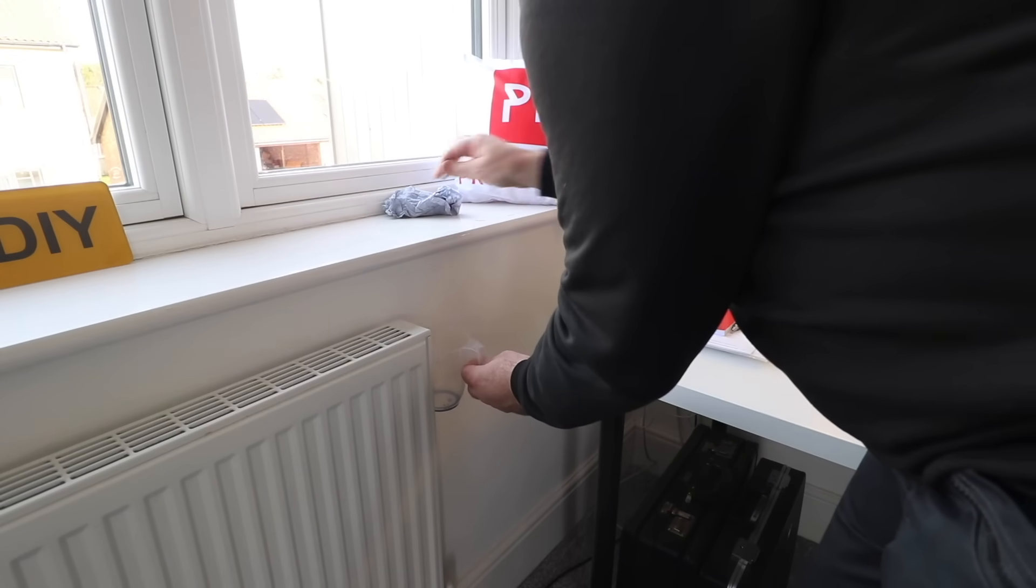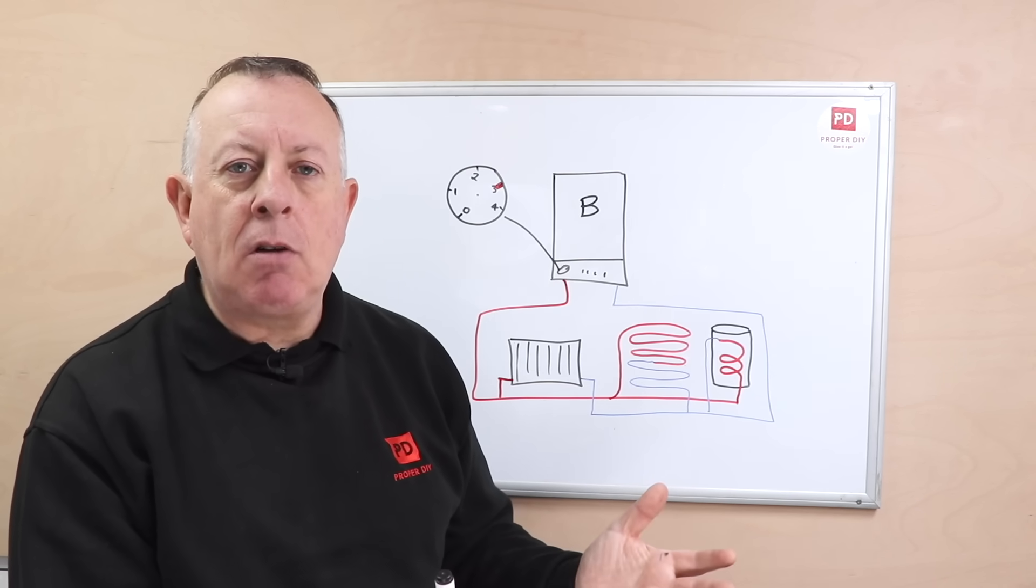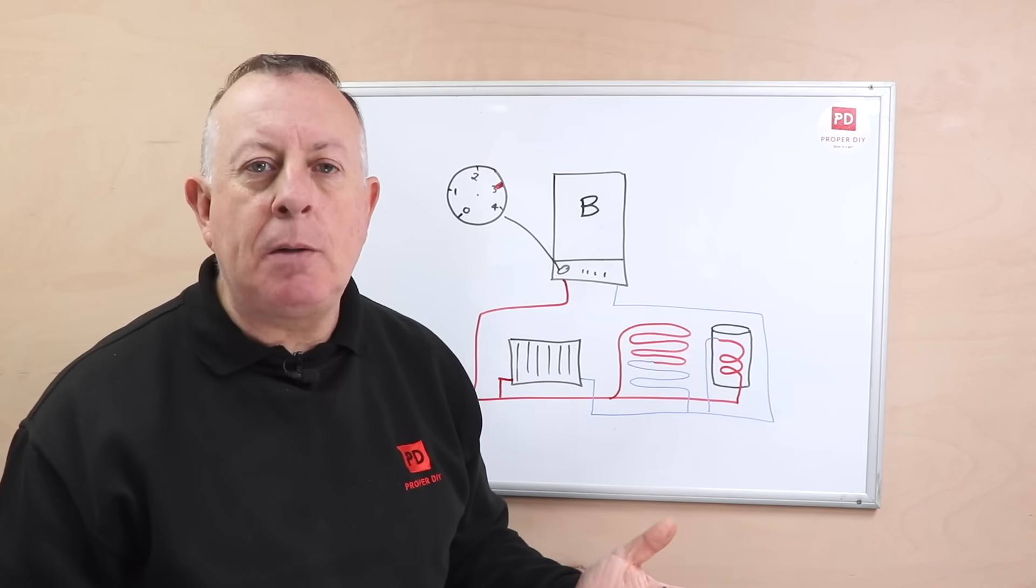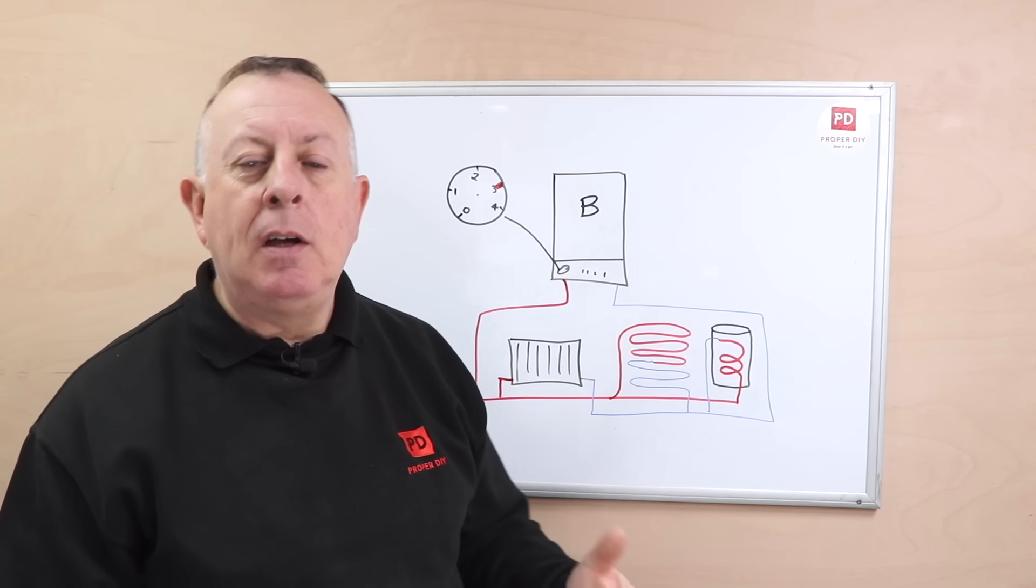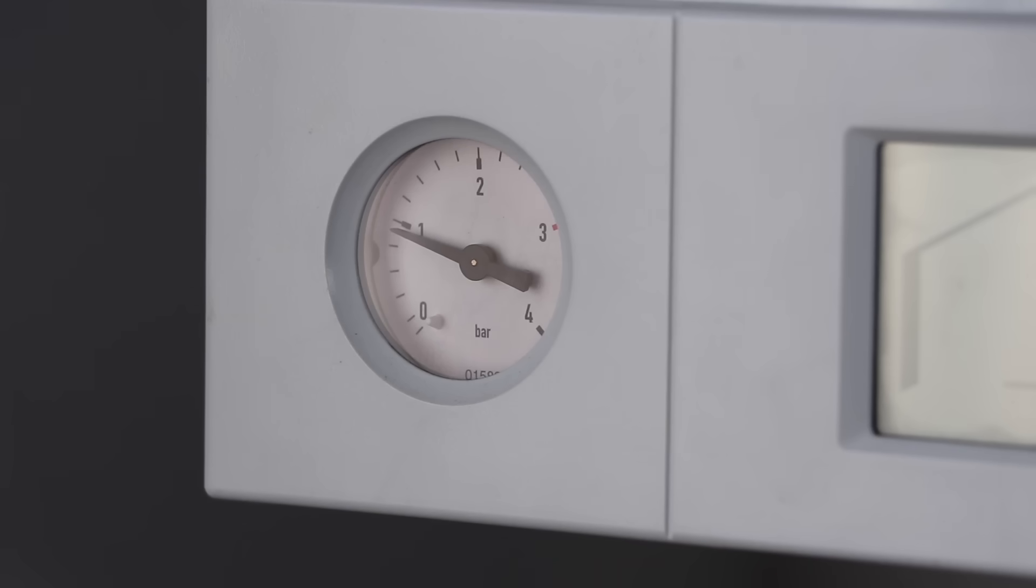Essentially removing that air and maybe a little bit of water from each radiator is enough to lower the pressure in this whole system, which is where we then need to go and top it up and make sure we're back to maybe one or one and a half bar. But that's obviously intentional.